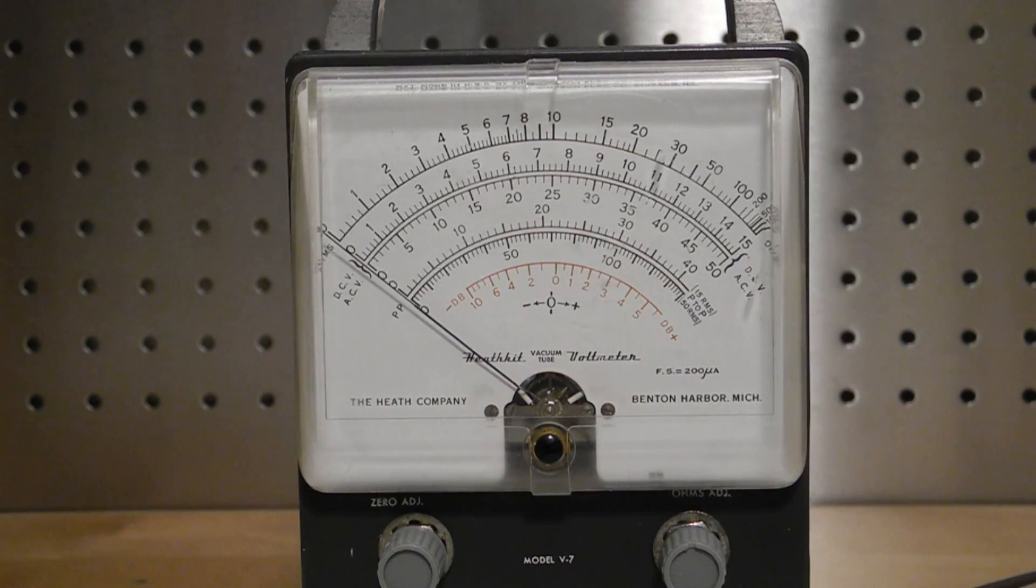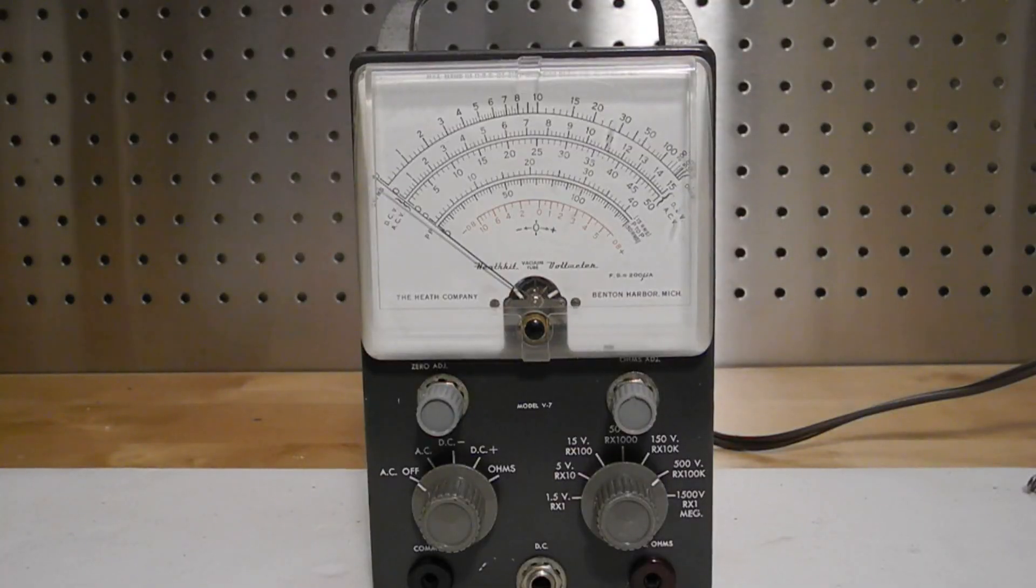The AC scale reads RMS based on a sine wave input. It also has a relative dB or decibel scale. A center zero scale can be used with the meter adjusted for zero at mid-scale.